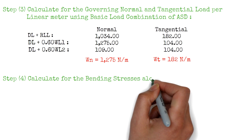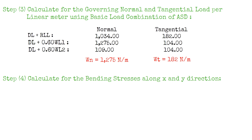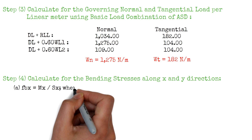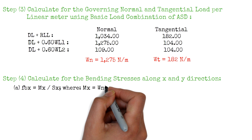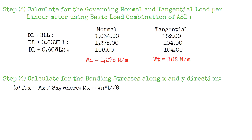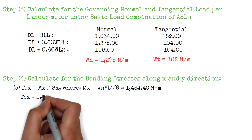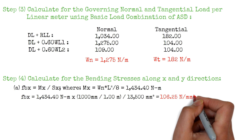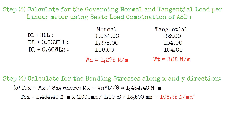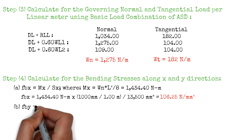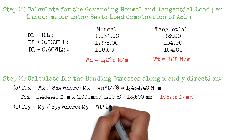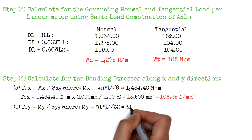The fourth step is to calculate the bending stresses along x and y directions. For the actual bending stress along the x direction: Fbx equals the moment along the x-axis, Mx, divided by the section modulus Sx. The moment equals the normal load per linear meter times the square of the length, divided by 8, giving a value of 1434.4 N·m. Therefore, the actual bending stress along x equals 1434.4 times 1000, divided by the section modulus, resulting in 106.25 N/mm². For the actual bending stress along the y direction: Fby equals the moment along the y-axis, My, divided by the section modulus Sy. The moment equals the tangential load per linear meter times the square of the length, divided by 32, giving a value of 51.19 N·m.